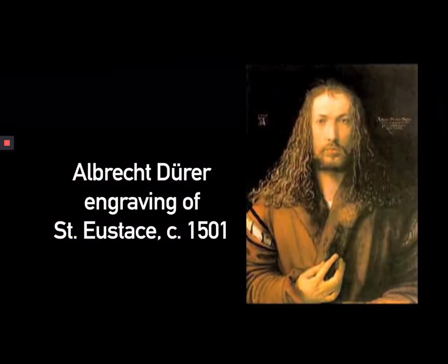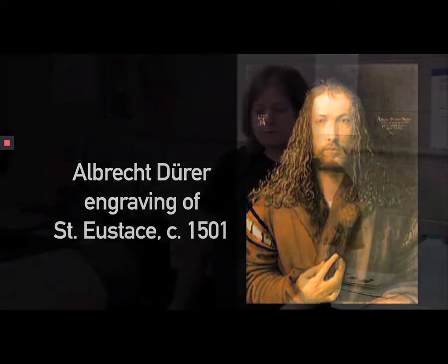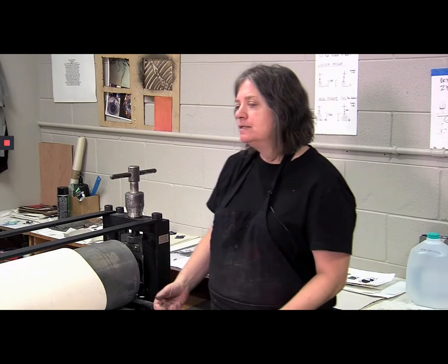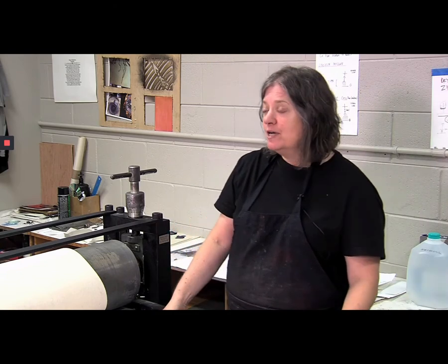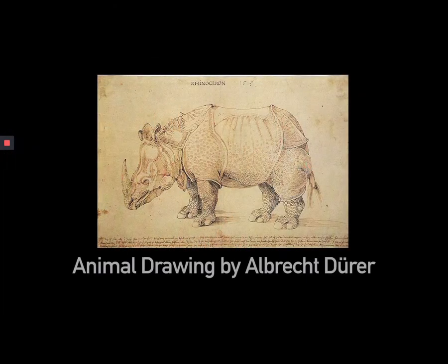Dürer was the more intelligent of the two in a sense because he foresaw the idea of market. He said when I make a painting it takes me six months — oil paint is ridiculously expensive and I have to take it to another country to show the king. But a print I can print off a plate 50, 100, 200 times, sell it for less money, and become a rich man.